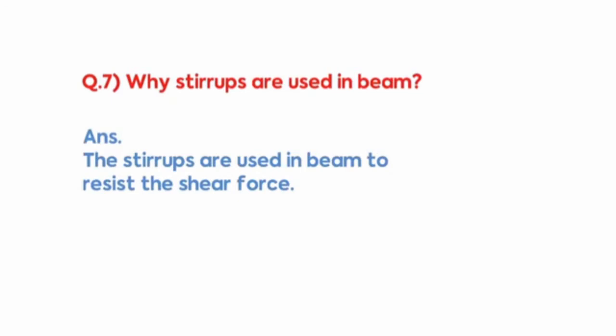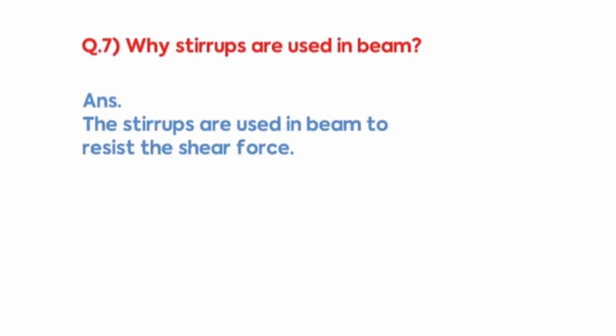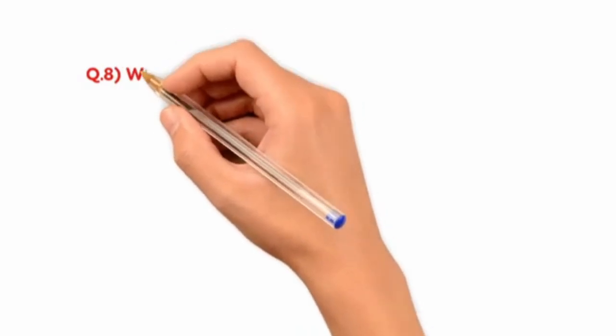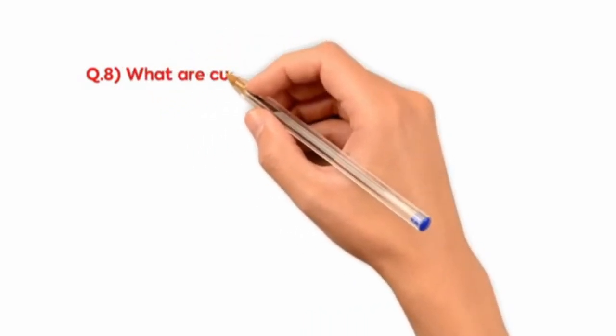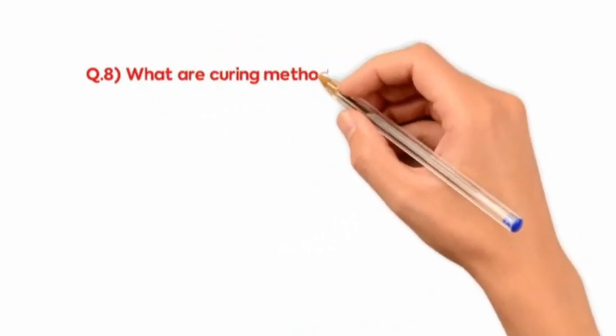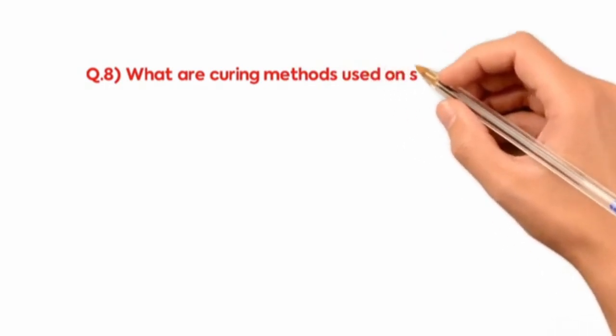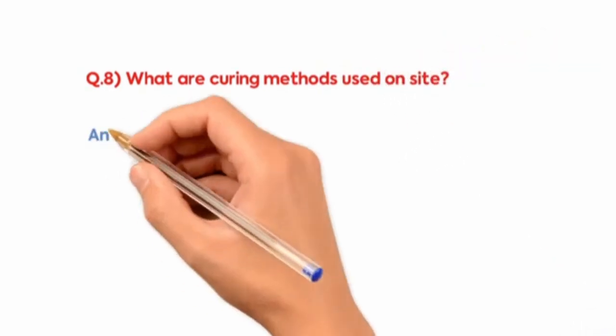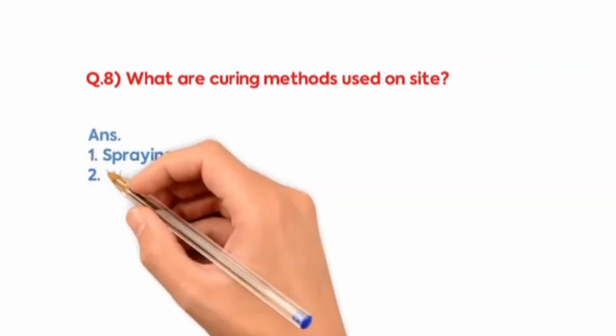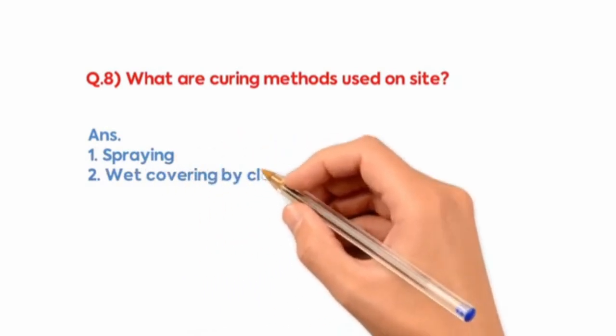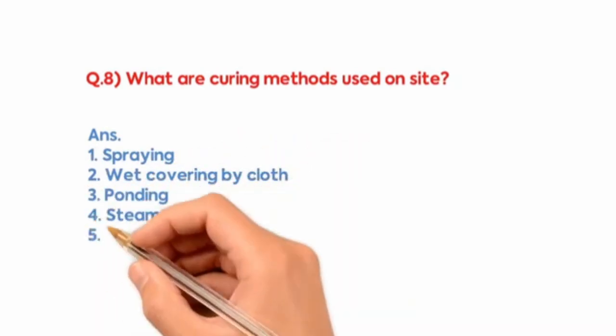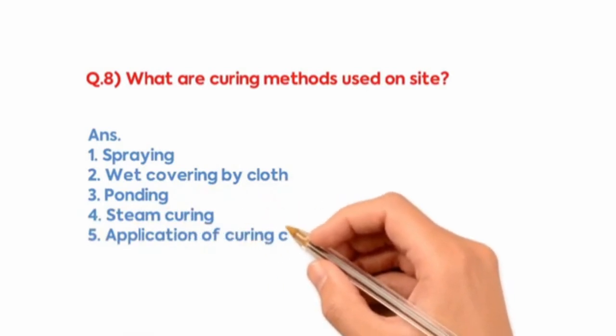What are the curing methods used on site? Spraying, wet covering by cloth, ponding, steam curing, application of curing chemicals.